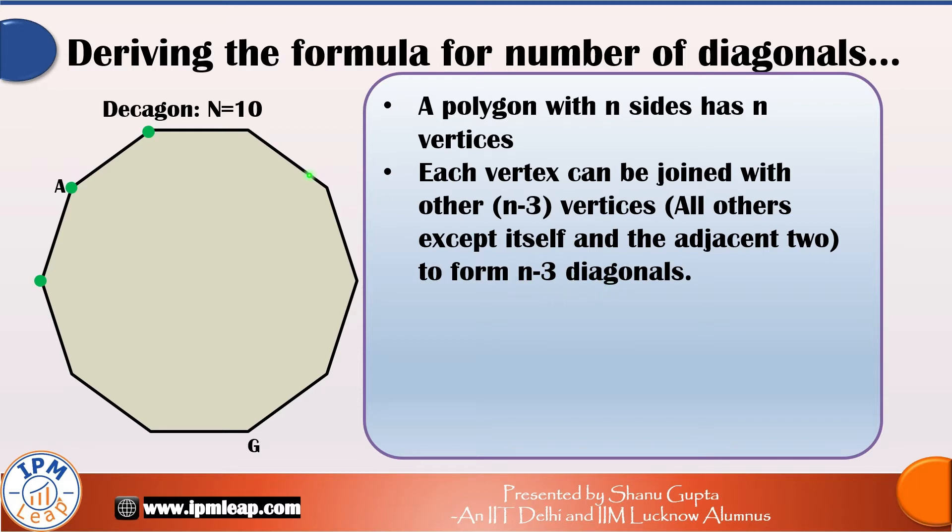Let me illustrate this for the decagon on your screen. A decagon has 10 sides and 10 vertices. So let's suppose I select vertex A, the green dot and try to join it to other vertices to form diagonals.